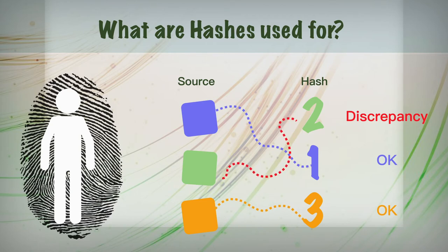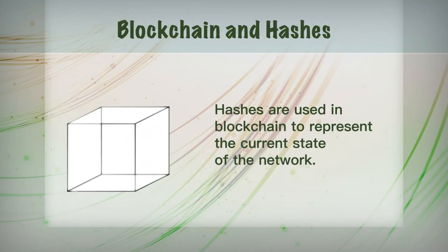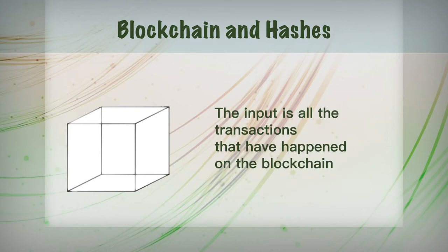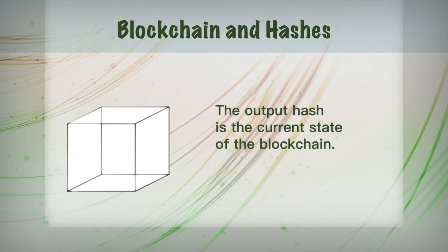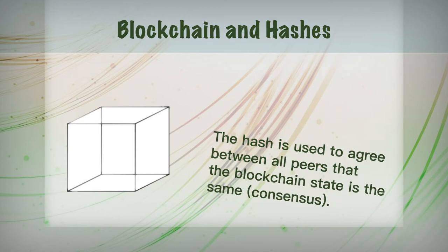So how does this affect the blockchain? Hashes are used in blockchain to represent the current state of the network. Inputs are all the transactions that have happened on the blockchain, and the output hash is the current state of the blockchain, or current state of the transaction. The hash is used to agree between all peers that the blockchain state is the same — basically to come to consensus.